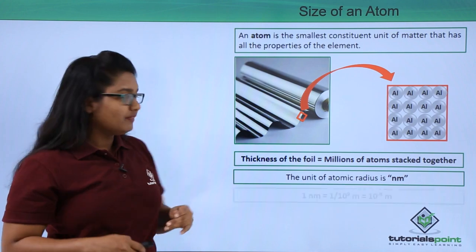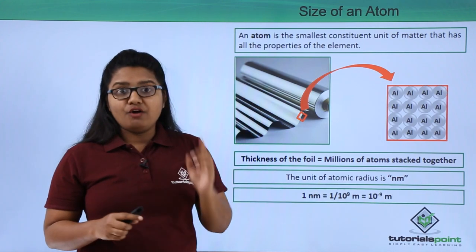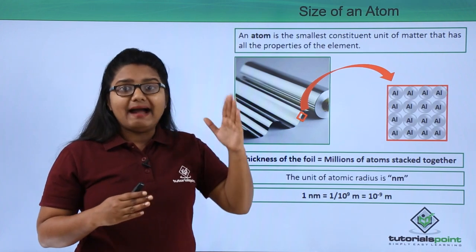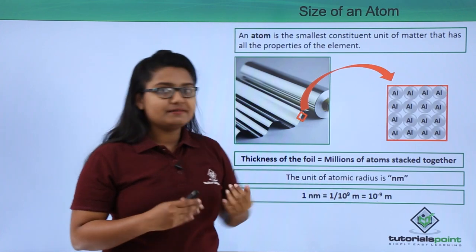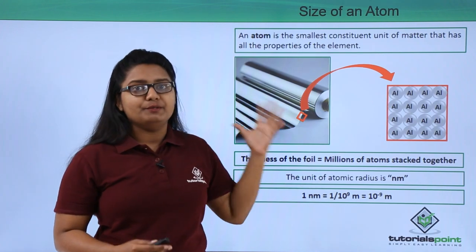What is this nanometer? A nanometer is 10 to the power 9th part of 1 meter, or we can say that it is 10 to the power minus 9 meters. This small an atomic size could be.